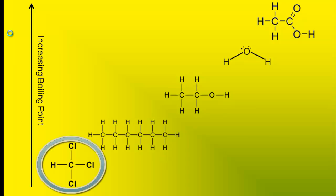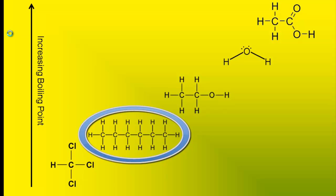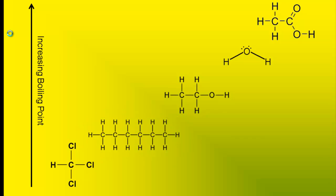Looking at chloroform at the bottom left, we can see that it's a somewhat polar compound. But the question still remains: why does a polar compound of such weight have a lower boiling point than hexane, which is the second compound on the list? Hexane is a very nonpolar molecule, and nonpolar molecules have weak intermolecular attractions, while polar molecules should have stronger intermolecular attractions.